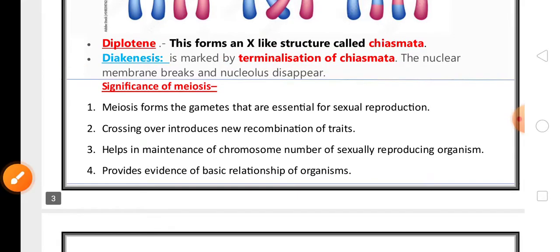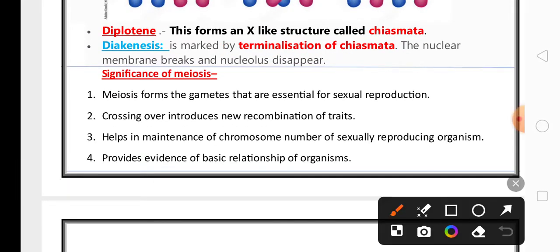Significance of meiosis is very important for two marks. It is essential for sexual reproduction. New recombination occurs because of crossing-over. It maintains chromosomal number in sexually reproducing organisms and provides basic evidence of the relationship of an organism.